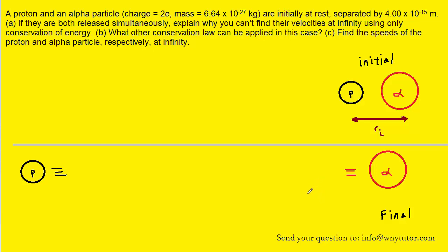One way to begin solving for their final velocities would be to use the conservation of energy. Initially, the only energy present is the electrical potential energy, which we can call PE. When they are released and move very far apart, there will no longer be any electrical potential energy, but that energy will be converted into kinetic energy, KE final. Through conservation of energy, these two energies would be equal to one another.